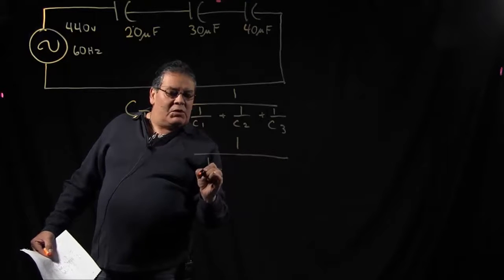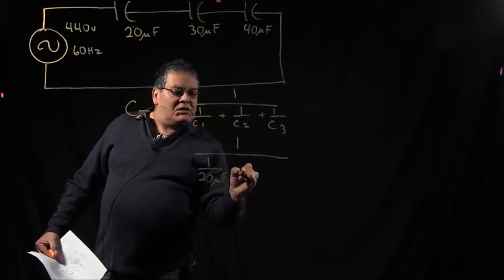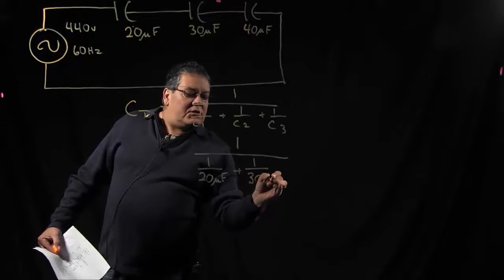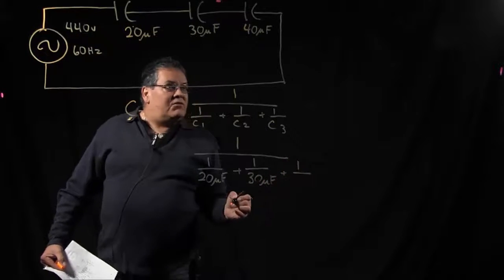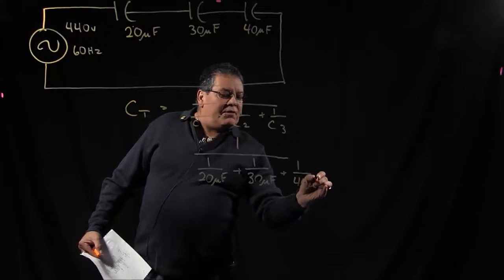C1 is equal to 20 microfarads, plus 1 over C2 which is 30 microfarads, plus 1 over C3 which is 40 microfarads.